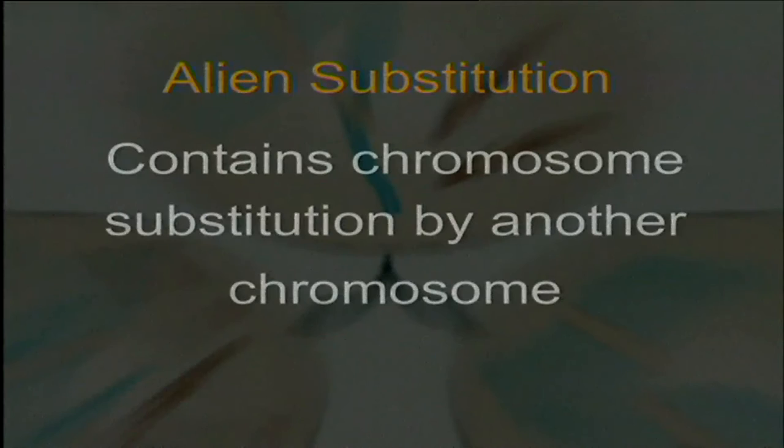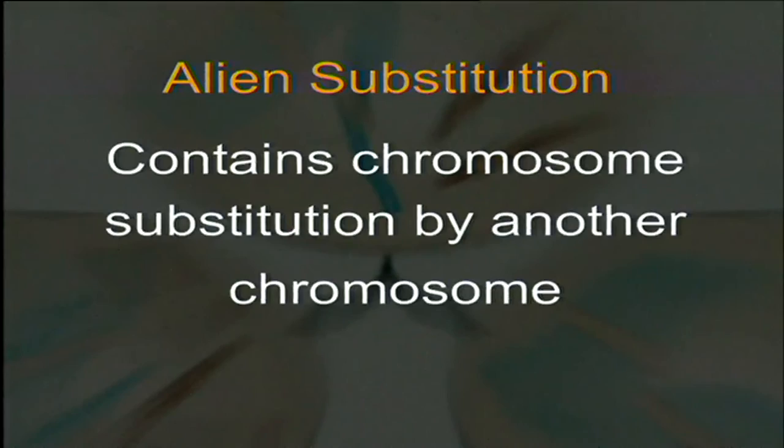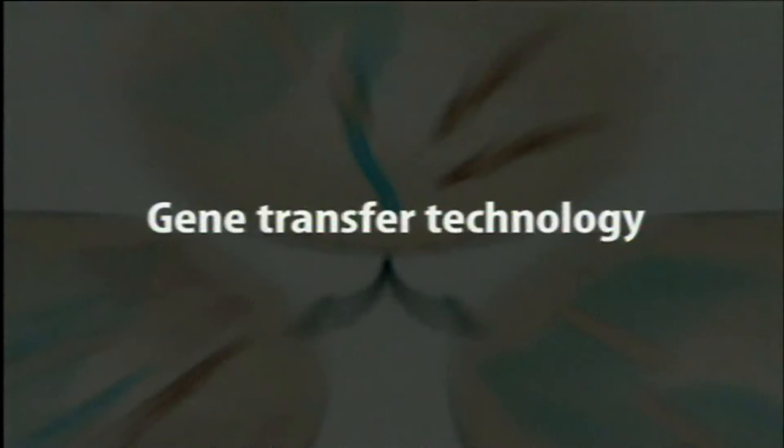Haploids are also used for the production of aneuploids, alien addition lines, and alien substitution lines. Aneuploids are plants carrying one or more chromosomes extra or fewer. An alien addition line contains one extra pair of chromosomes, while an alien substitution line contains a chromosome substituted by another. Haploids are currently also used in transgenic plant development programs, that is, in gene transfer technologies.